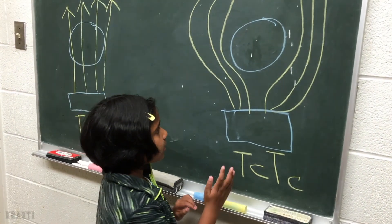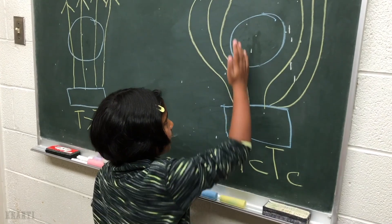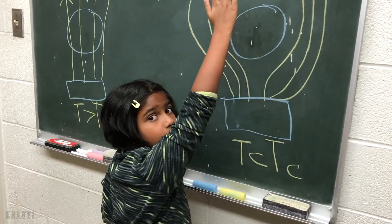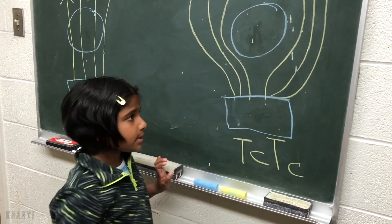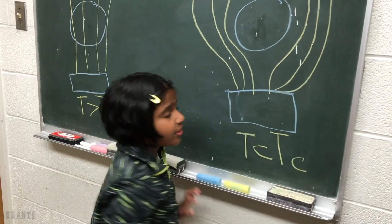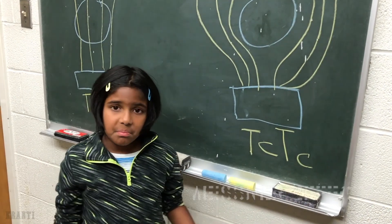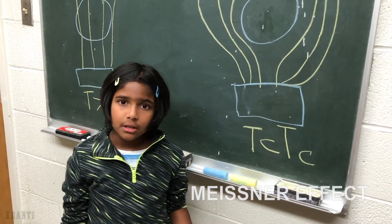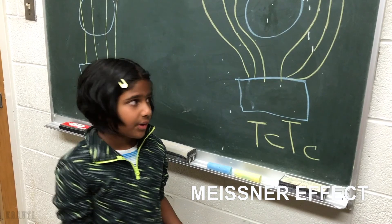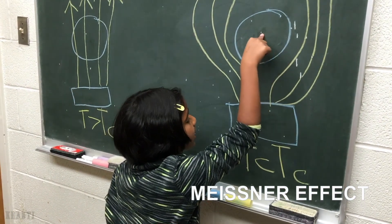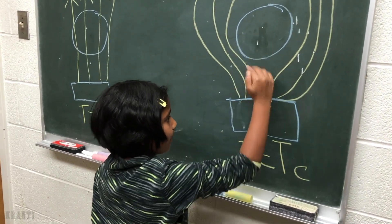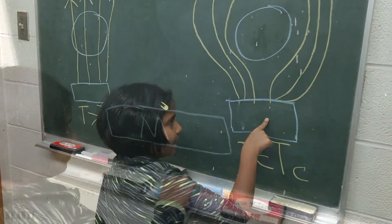The superconductor does not let any magnetic field go through it. Instead, the magnetic field goes around it. This is known as the Meissner effect. Because of the Meissner effect, it lets the superconductor levitate on top of the magnet.